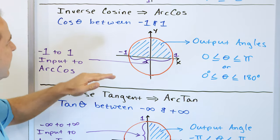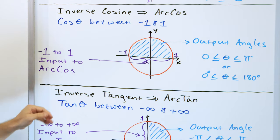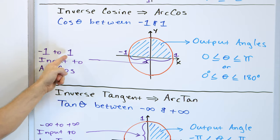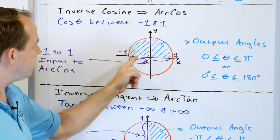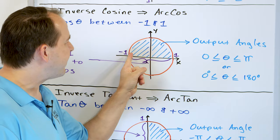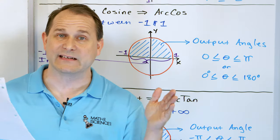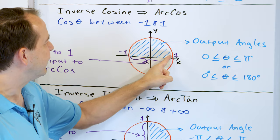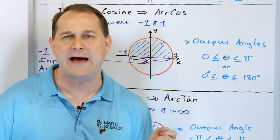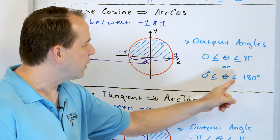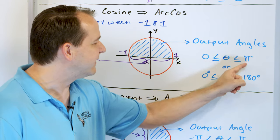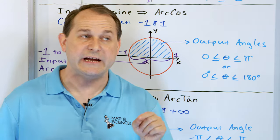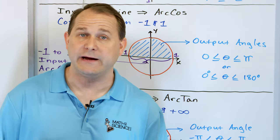For inverse cosine, also called arc cosine: because the cosine can only be between -1 and +1, the input to arc cosine can only be between -1 and +1. Because of that, the angles the calculator returns will only fall between 0 and π — that is, 0 to 180 degrees. If you stick a number in your calculator and hit arc cosine, you will never get an angle outside that range.